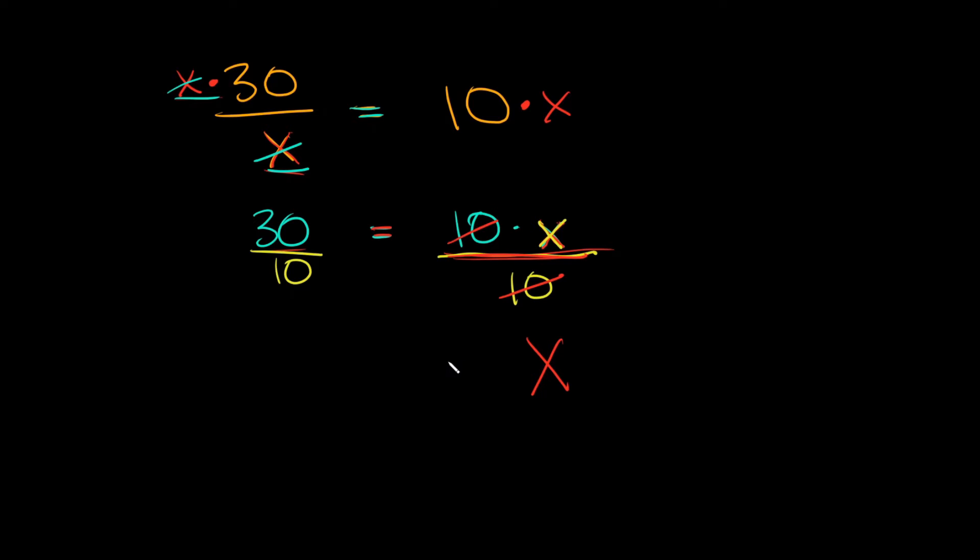And then that's going to equal 30 over 10. 30 over 10 or 30 divided by 10 is just equal to 3. So our final answer here is x is equal to 3.